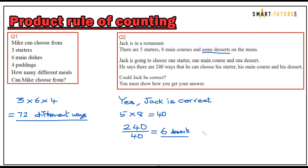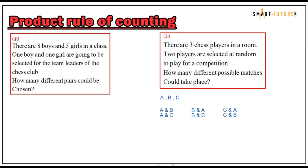Six desserts is a possible answer, so we conclude yes, Jack is correct. Because when you divide and get an integer result, it is valid. If the result were a decimal or fractional answer, you would conclude Jack is incorrect, since the number of starters, main courses, and desserts must be a whole number.